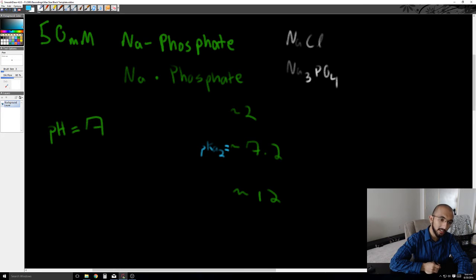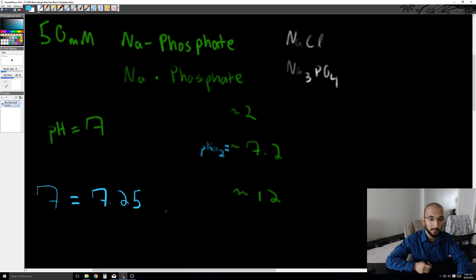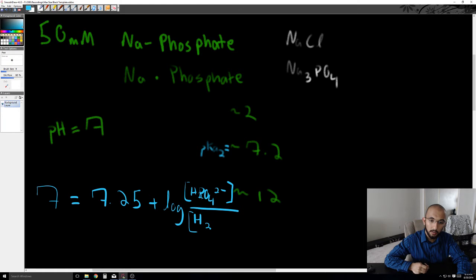So if I write out the Henderson-Hasselbalch equation for this, it would be 7 is equal to 7.25, or 7.23, I can't remember the exact number from the problem set, but it's not a big deal, plus log of HPO42-, the conjugate base, over H2PO4-.